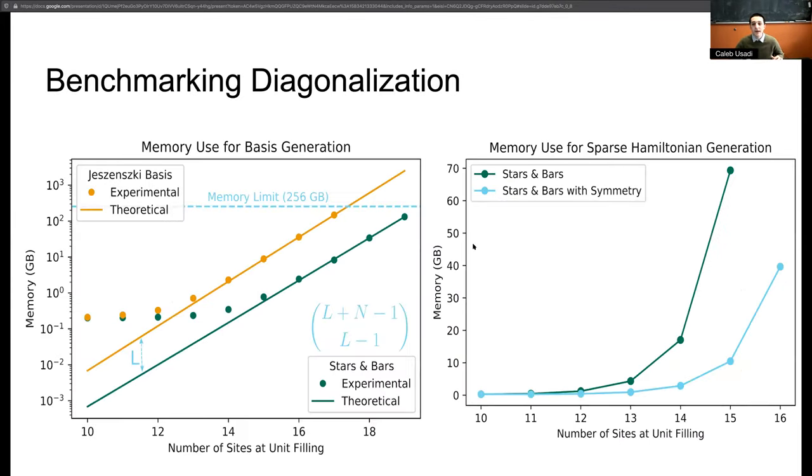Looking at the memory use for the sparse Hamiltonian generation is validating when utilizing the symmetries. As well, the memory use for stars and bars correlates very closely to the memory use for the Yadzinski basis, which is to be expected because there's very little of a computational change when working with stars and bars. The significant difference is that there has been such a speed up and memory save with generation of the basis vectors. With the implementation of the symmetries, however, you see a dramatic reduction in the memory cost for the generation of the Hamiltonian.